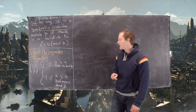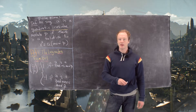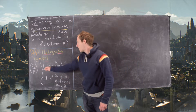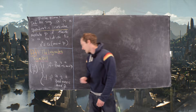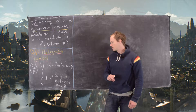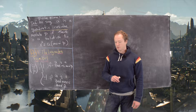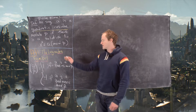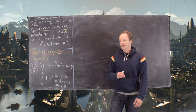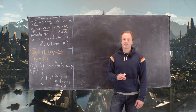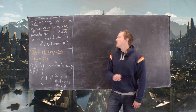The Legendre symbol is written (a/p) and is defined as follows: it equals 1 if a is a quadratic residue modulo p, and negative 1 if a is a quadratic non-residue modulo p. So the Legendre symbol asks the question: is a a quadratic residue mod p or not?